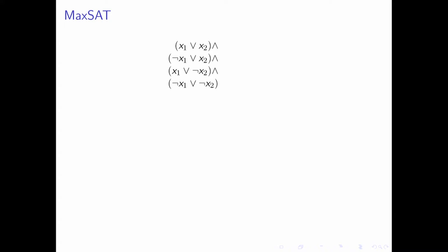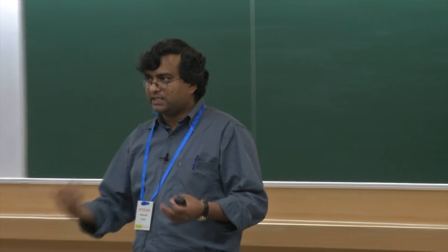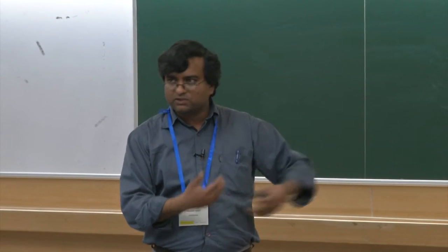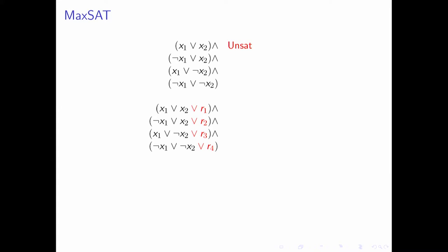Consider a formula with all four combinations of literals x1 and x2 — this is unsatisfiable. Since the SAT solver gives a binary answer, to use it for optimization we introduce a new set of relaxation variables r1, r2, r3, r4. This relaxes each clause, making the formula satisfiable.